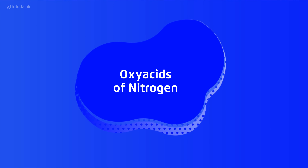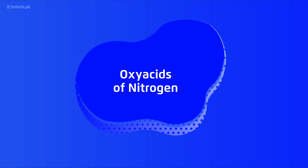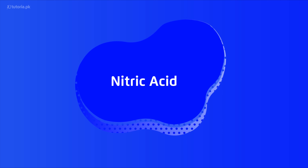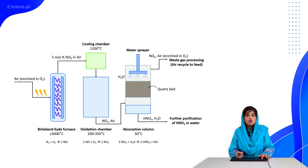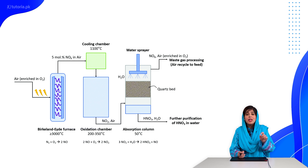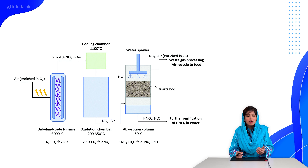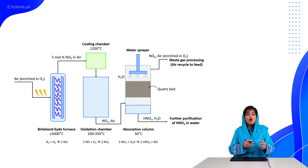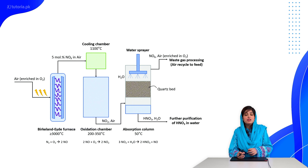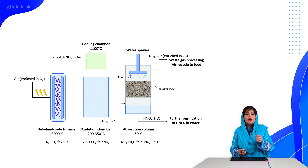Nitrogen dioxide is soluble in water compared to other gases. Among oxy acids of nitrogen, we discuss nitrous acid and nitric acid. Nitric acid is prepared via a process where nitrogen and oxygen are heated in an electric arc at 3000°C to generate nitric oxide, which is then oxidized to nitrogen dioxide in an oxidation chamber, and finally absorbed in water to produce a mixture of nitrous and nitric acid.